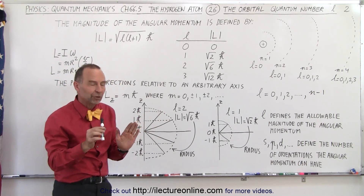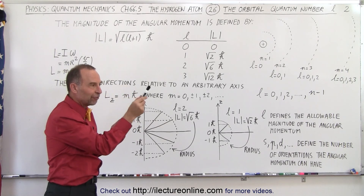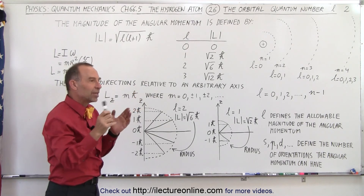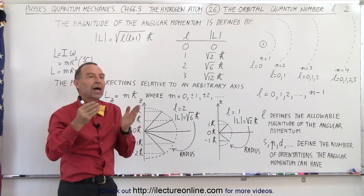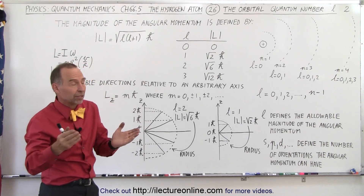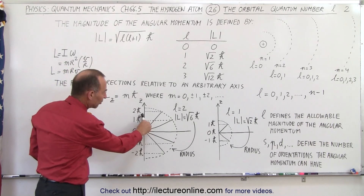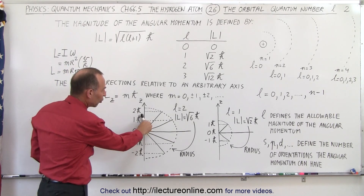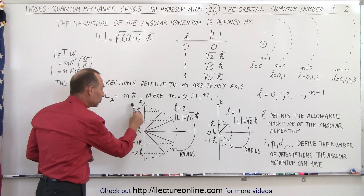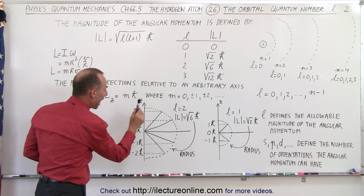We have to be careful — the angular momentum will never be pointing in a specific direction, because the uncertainty principle doesn't allow us to know exactly what direction the angular momentum of an electron will be at any point in time. The angle relative to the axis is defined by the quantum state, but it could be anywhere — it could actually rotate around at a specific angle.